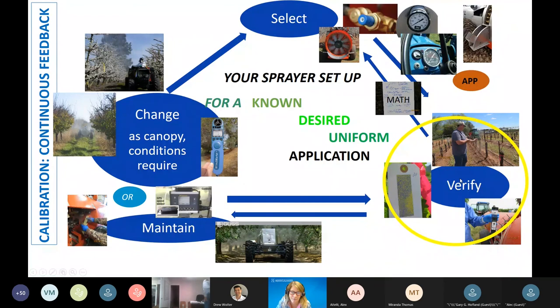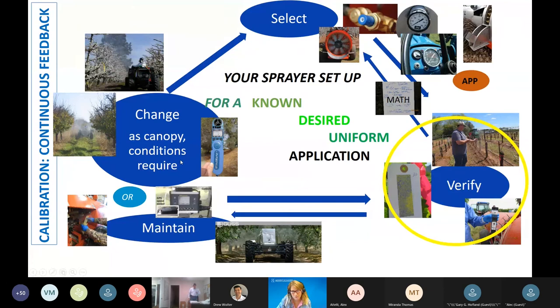After calibration, we maintain those parameters — whether physically yourself by maintaining ground speed, using a remote controller, or even an autonomous spray system like GUS. But you still have to set and verify those parameters. Canopy conditions change, requiring you to start the process over again. Calibration is really a continuous, dynamic feedback process.